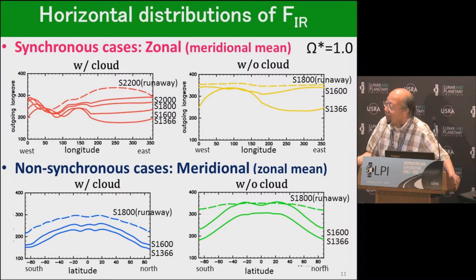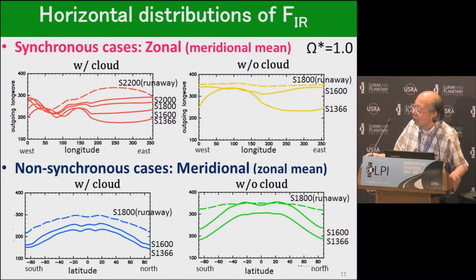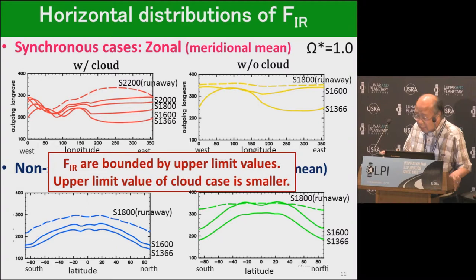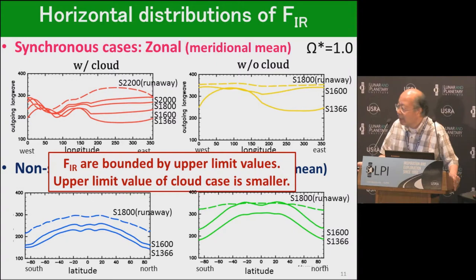This shows the horizontal distribution of infrared radiation. The solid line indicates the equilibrium state and the dashed line indicates the runaway state. With increased solar constant, the infrared radiation reaches the upper limit. In all cases, this upper limit determines the emergence condition of the runaway greenhouse state.